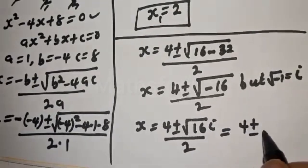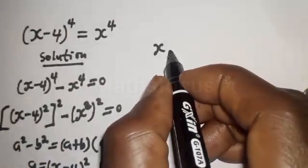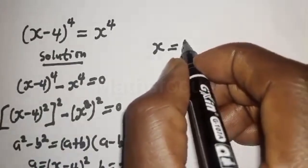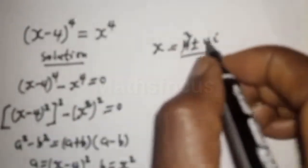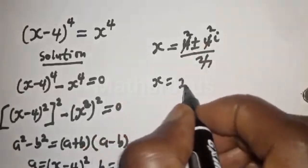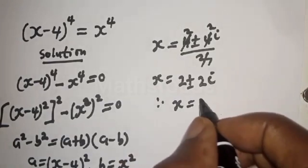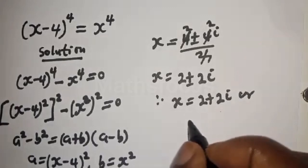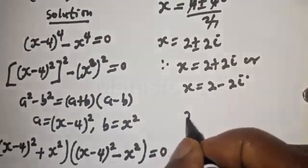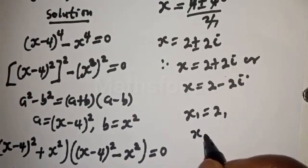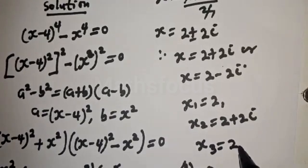This equals 4 plus or minus 4i over 2, simplifying to x equals 2 plus or minus 2i. Therefore x equals 2 plus 2i, or x equals 2 minus 2i. Our final answers are: x₁ equals 2, x₂ equals 2 plus 2i, and x₃ equals 2 minus 2i. This is the final answer.